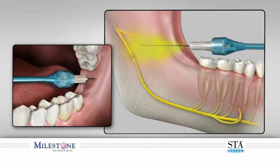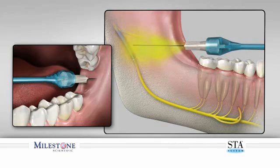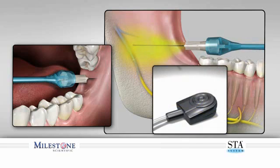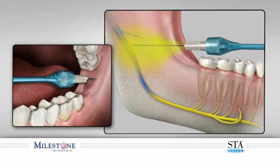Advance the needle until bone is contacted. The final target is the medial aspect of the ramus within the infratemporal fossa. Once at your target site, perform an aspiration by depressing and releasing the foot control. If the aspiration is negative, continue the injection. If aspiration is positive, reposition the needle and repeat aspiration by depressing and releasing the foot control pedal again until a negative aspiration is obtained.